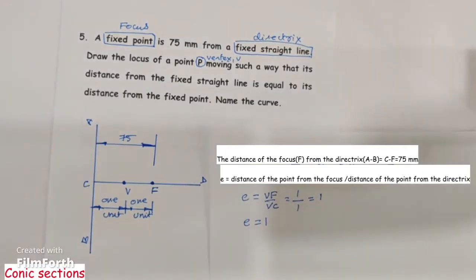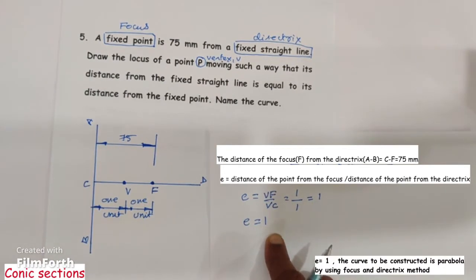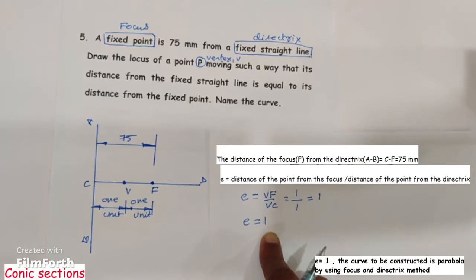If e is equal to 1, then the name of the curve to be constructed is parabola. The method used is focus and directrix method. If e value is less than 1, the curve is ellipse. If e value is greater than 1, the curve is hyperbola. In the present case e equals 1, so we are going to construct a parabola using focus and directrix method.